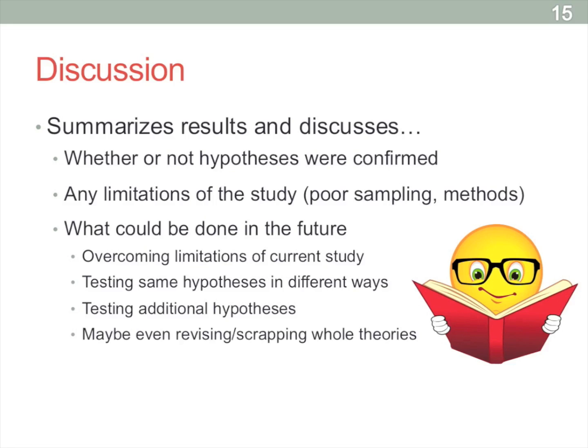And then also, maybe revising and scrapping whole theories. So in fact, if they had found, if maybe they'd done the test and found that people observer ratings more strongly correlated with idealized self-ratings, maybe then they would have to really reconsider their own hypothesis that people put up an accurate portrayal of themselves on these Facebook sites.